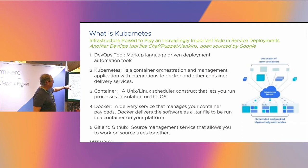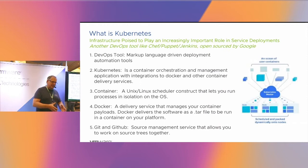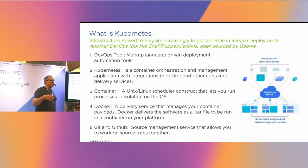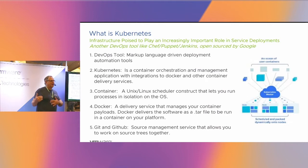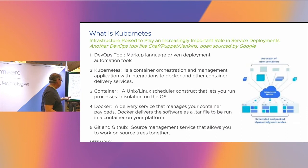Kubernetes is a Container Orchestrator. A container is a scheduling algorithm — these things run on Linux and go into the scheduler that runs things in isolation. For Raspberry Pis, you're basically just running one container at a time. Docker is a delivery mechanism of your image. Your Docker file that comes from docker.com is a tar file that gets installed and runs in a container. Git and GitHub are places for source management and putting your application up.